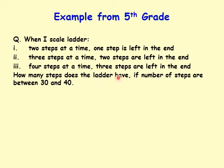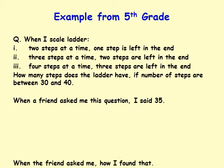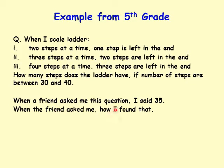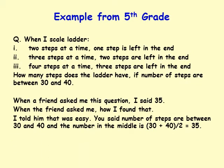When a friend asked me this question, I said 35. When the friend asked me how I found that, I told him it was easy. You said number of steps are between 30 and 40, and the number right in the middle is 30 plus 40 divided by 2, which is 35. Well, that's the wrong approach. That's not the way to approach it. I know I got lucky that time, and I might have got lucky other times too, but that's not the way we do it. It's an LCM problem.